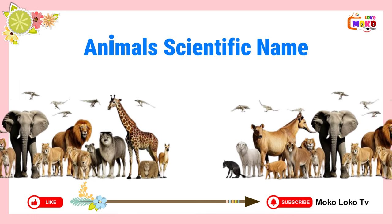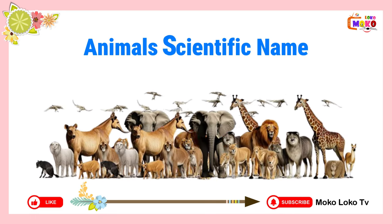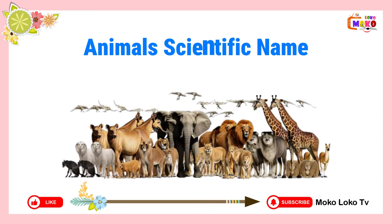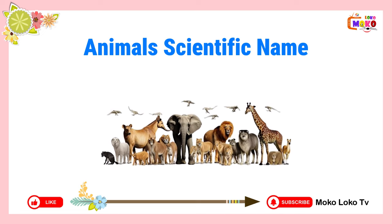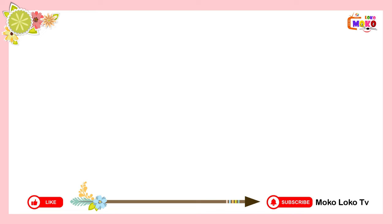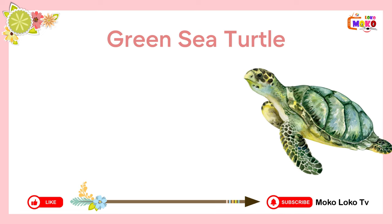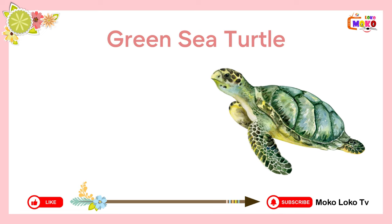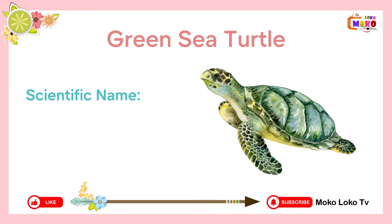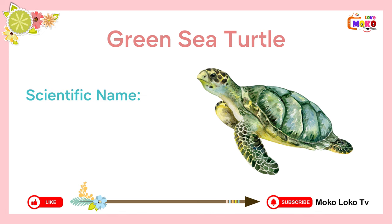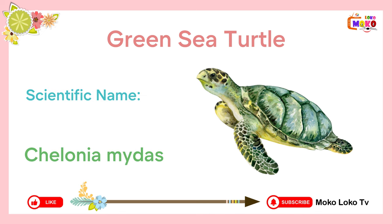Here are some examples of animals along with their scientific names. Green sea turtle. Scientific name: Colonia midas.